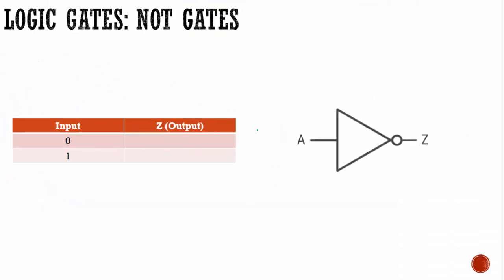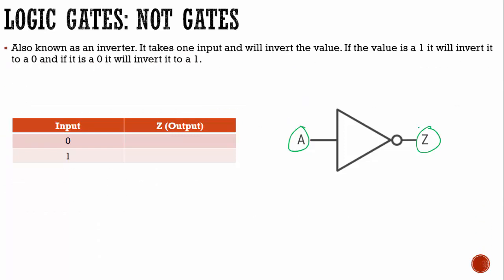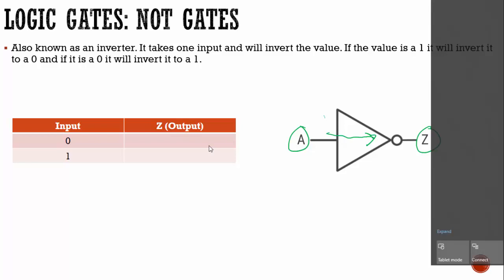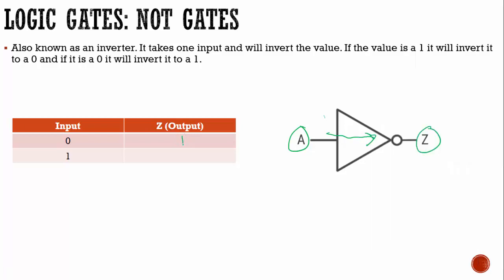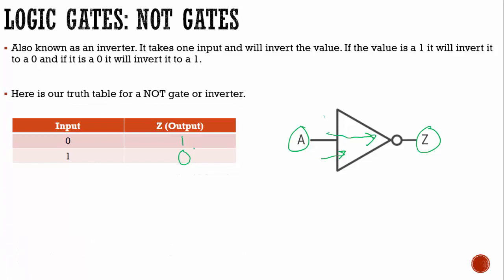Now we have NOT gates, which are also known as inverters. There is one input and one output — notice we only have one input going in, because sometimes we only want to change one input. A NOT gate takes one input and inverts the value: if the value coming in is a one it will invert it to a zero, and if it's a zero it will invert to a one. So if my switch is off, once it goes through this inverter my zero will change to a one. If it's a one coming in through the inverter, it will change from a one to a zero. Here is our truth table for a NOT gate — very short.